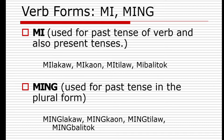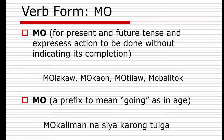The verb form 'mi' is used for past tense and also present tense. Examples: 'milakao', 'mikaon', 'mitilaw', 'mibalita'. 'Ming' is also for past tense but in the plural form: 'minglakao', 'mingkaon', 'mingtilaw', 'mingbalita' — so 'minglakao sila', meaning many of them. The verb form 'mo' is used for present and future tenses and expresses action to be done without indicating its completion: 'mulakao', 'mukaon', 'motilaw', 'mobalita'. The action is ongoing with no time indicator for when it will be finished.